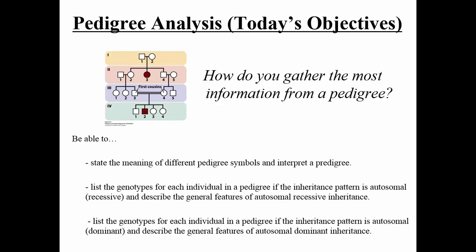Today's lecture will focus on pedigree analysis. The objectives are threefold: we'd like to state the meaning and different symbols you see in a pedigree — such as squares and circles — what do they mean? We'd also like to talk about different types of inheritance patterns: autosomal recessive and autosomal dominant. We'll save sex linkage for a separate lecture.